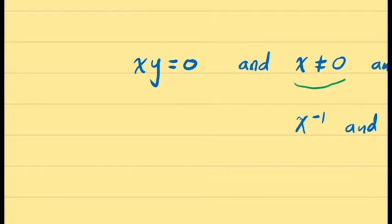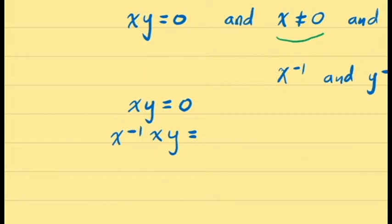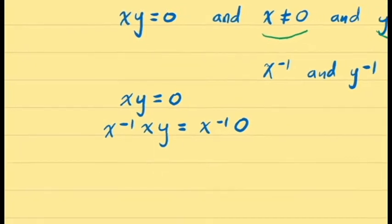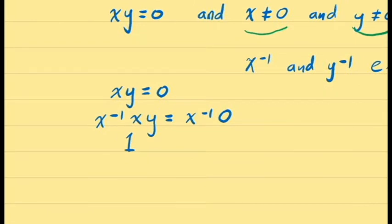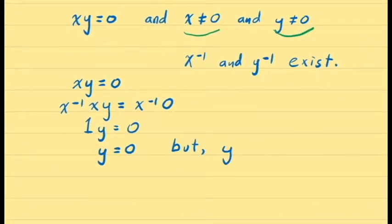Starting with xy equals 0, we multiply both sides by x inverse — which we can do because x is not 0. This gives x inverse times xy on the left and x inverse times 0 on the right. Since x inverse times x is 1, the left-hand side becomes y, and since any number times 0 is 0, the right-hand side is 0. We now have y equals 0. But our assumption says y is not equal to 0, and this is our contradiction.